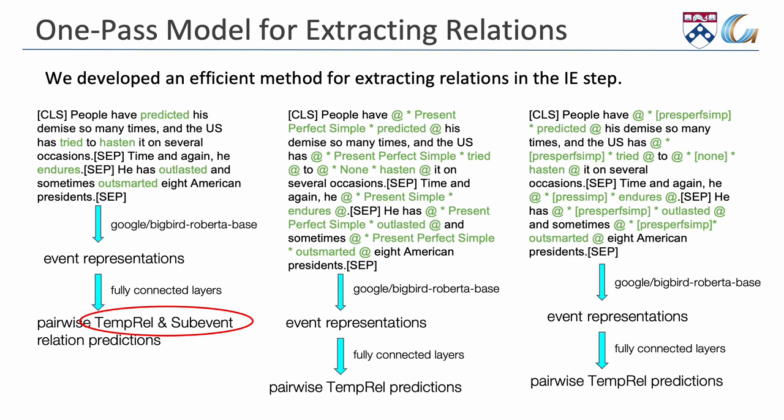One is in plain text, like present perfect simple. The other is the acronym of the tense in square brackets. The first format performed slightly better than the second, and so we eventually adopted the first format to predict temporal relations between events.